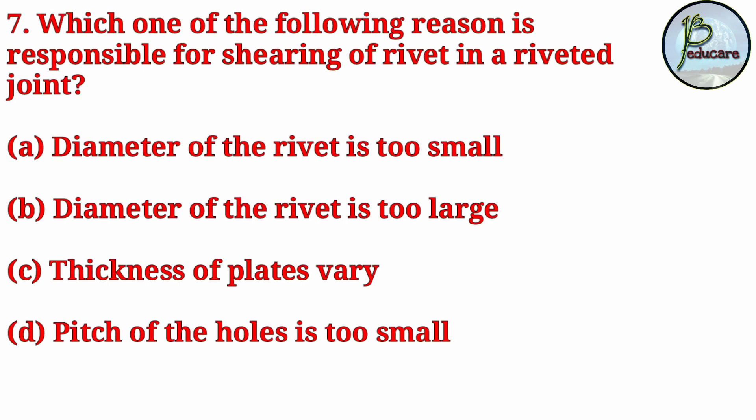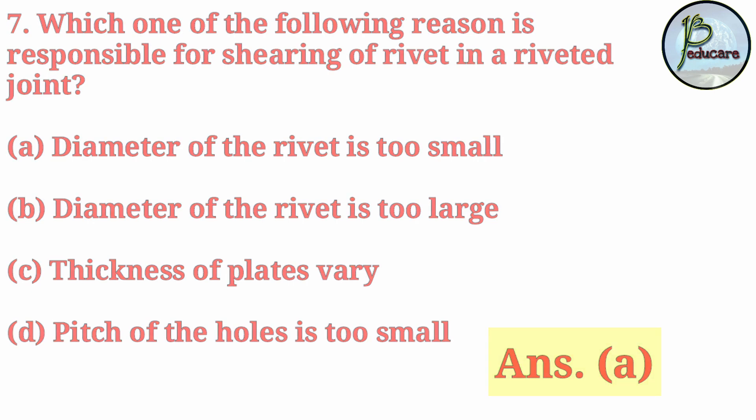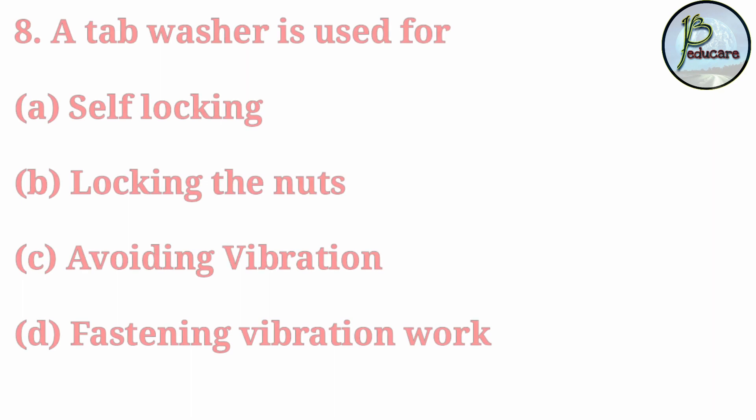Next question: which one of the following reasons is responsible for shearing of a rivet in a riveted joint? The correct answer is option A: the diameter of the rivet is too small.